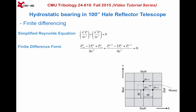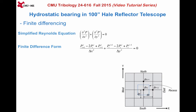Now let's discretize the governing Laplace's equation. Let's use second-order accurate central difference schemes for the two pressure derivatives. Thus, ∂²p/∂x² becomes (p_{i+1,j} − 2p_{i,j} + p_{i−1,j}) / Δx², and correspondingly, ∂²p/∂y² becomes (p_{i,j+1} − 2p_{i,j} + p_{i,j−1}) / Δy². Since the domain is square, we can use equal grid points along x and y directions. Thus, dx equals dy, and the discretized equation further simplifies to this equation.